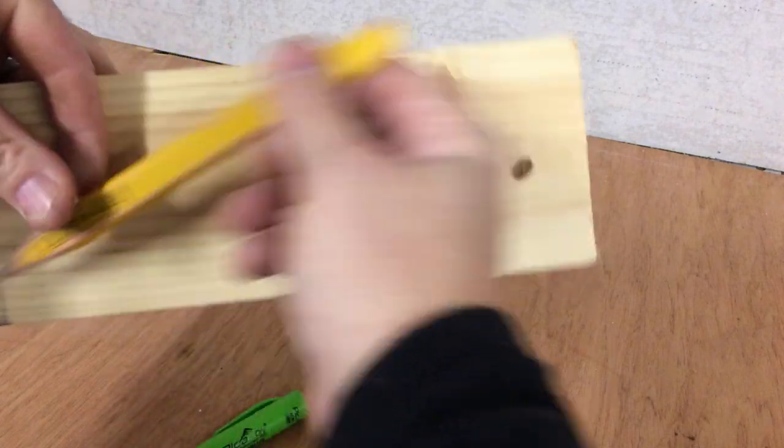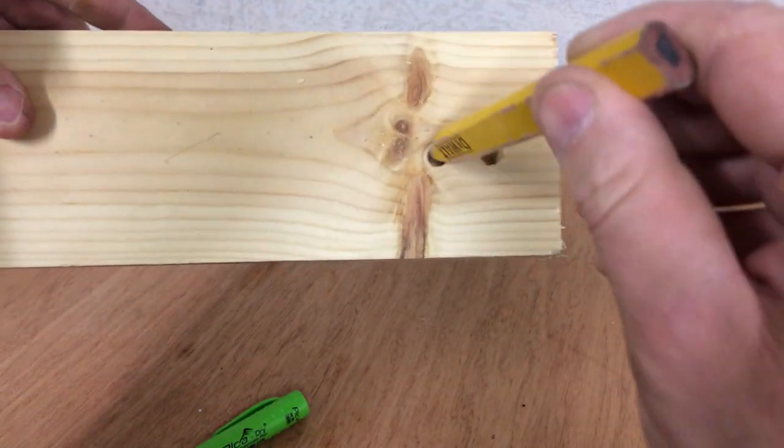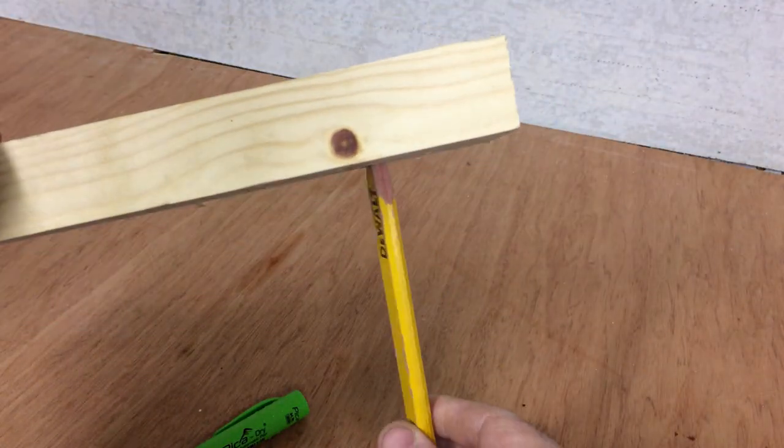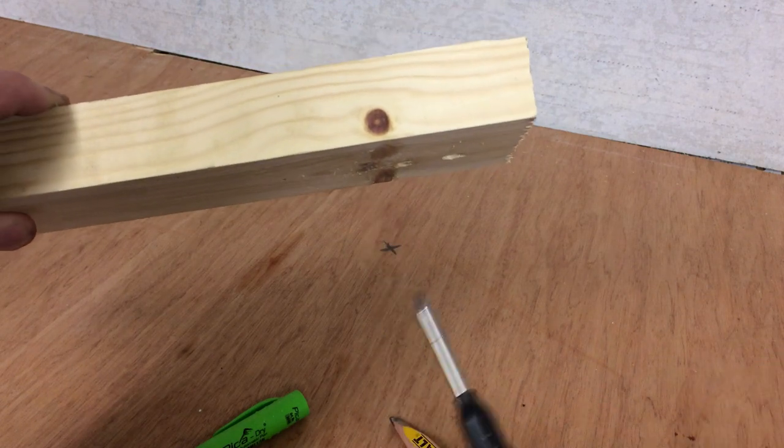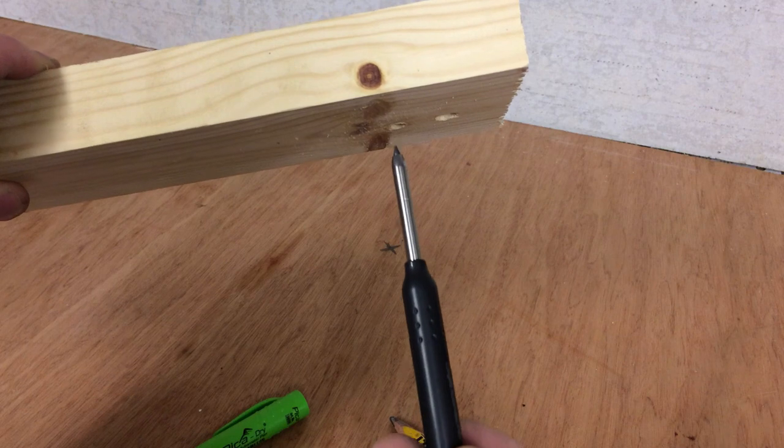Typically you would have a pencil, a carpenter's pencil on you like this. And obviously that's absolutely useless for trying to get them through the hole to mark. So with the Pica pencil you can see the difference here.